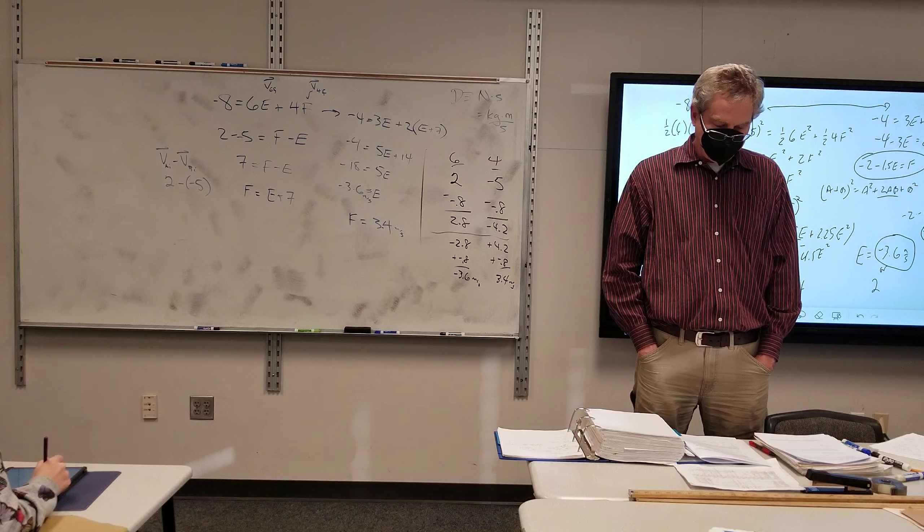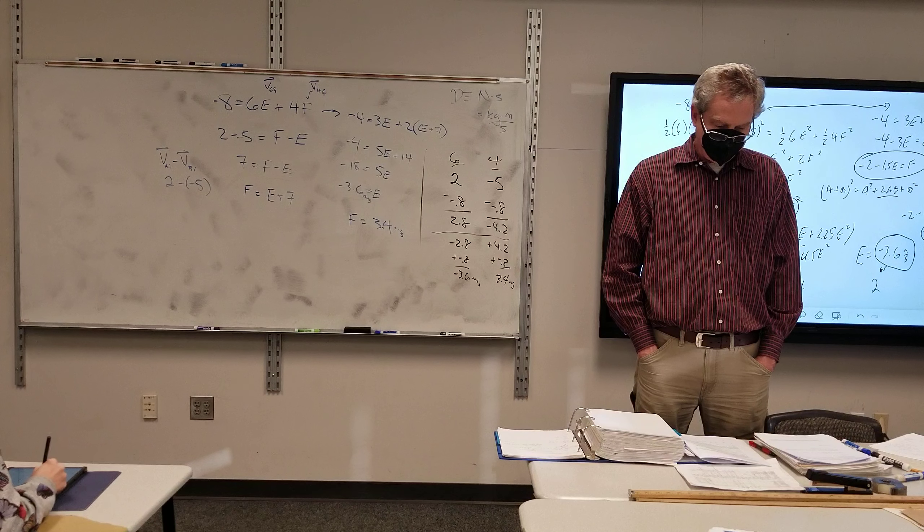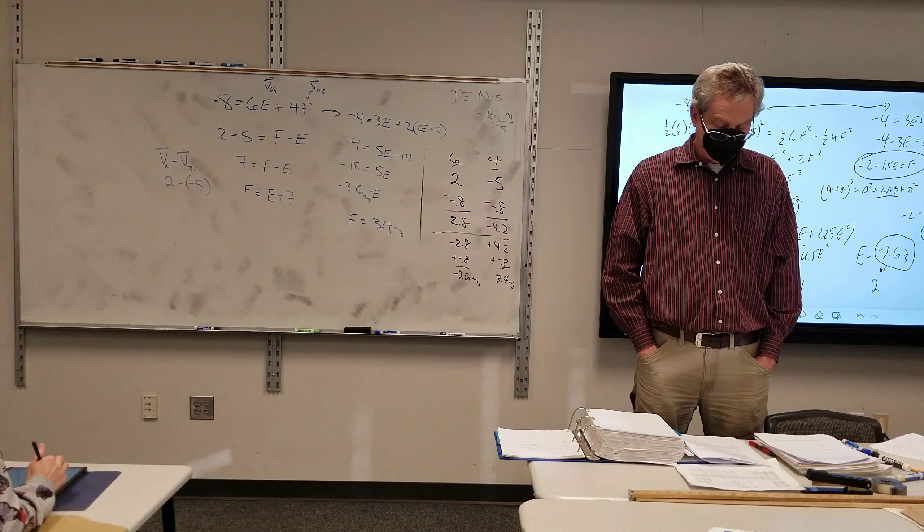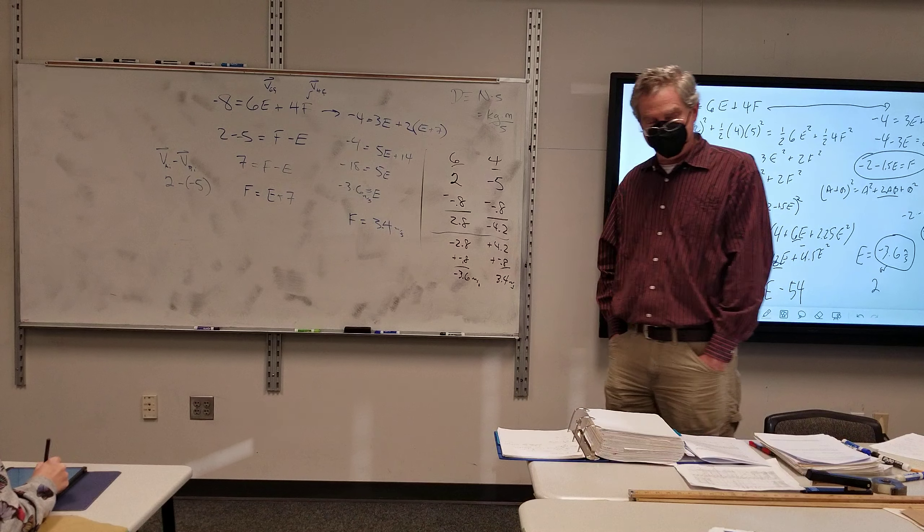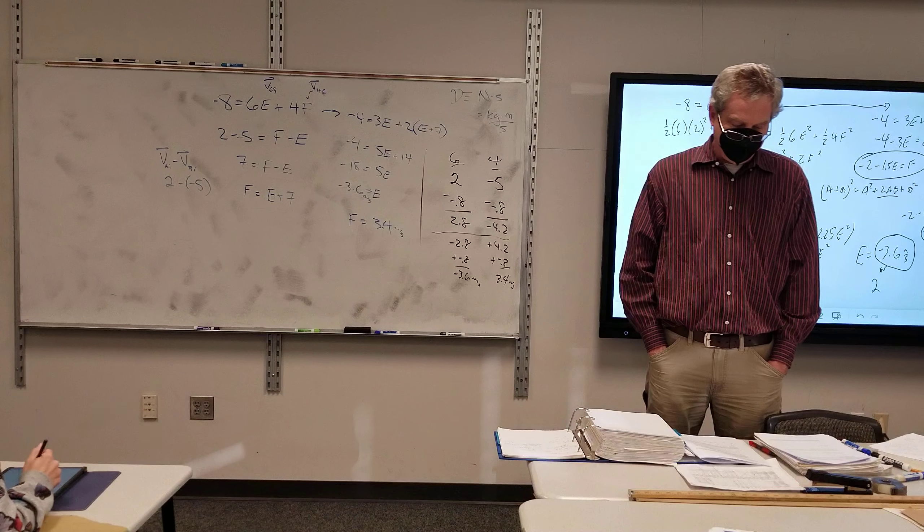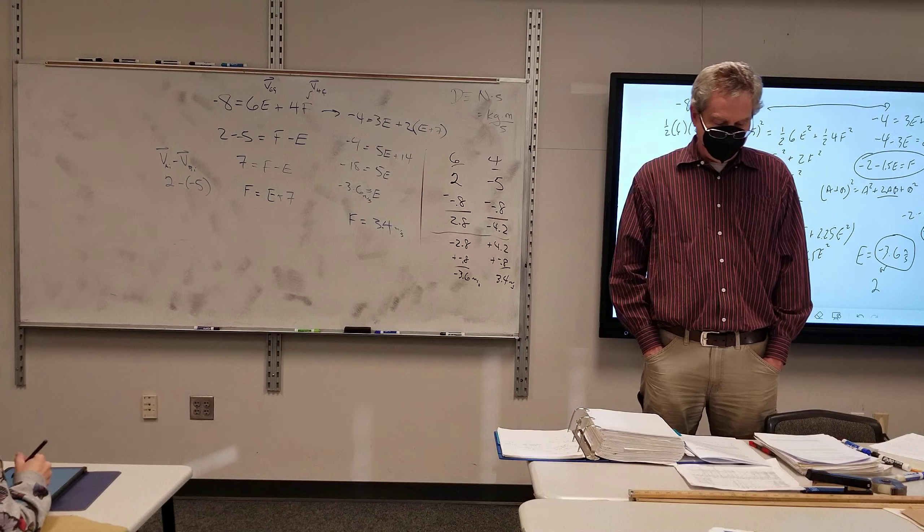F would be that minus 3, so that's 0.4. So F is negative 2.6. So how do I know there's got to be a mistake there?